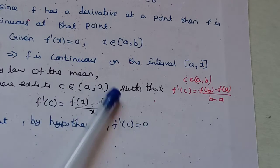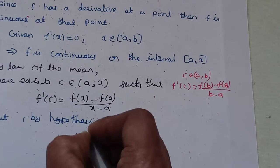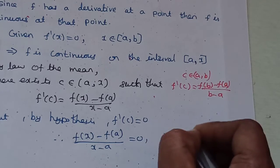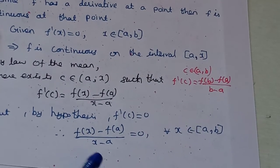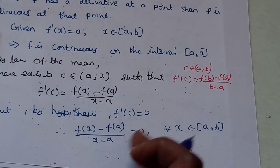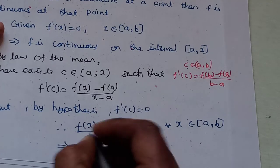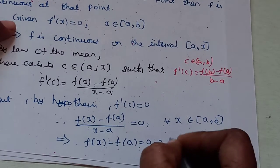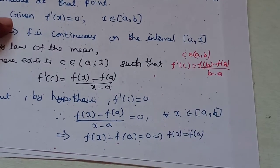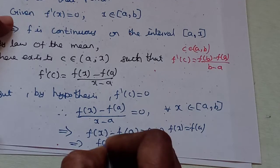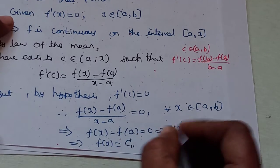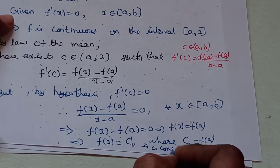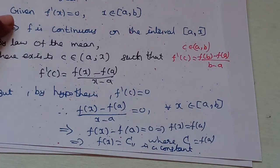If f'(c) equals 0, we put that in the fraction equal to 0. Therefore, f(x) minus f(a) divided by x minus a equals 0, for all x belonging to the closed interval [a, b]. If one fraction is 0, then the numerator must be equal to 0. So f(x) minus f(a) equals 0, which means f(x) equals f(a). If a is constant, then f(a) is constant. Therefore f(x) equals capital C, where C equals f(a) is a constant. Hence the theorem is proved.